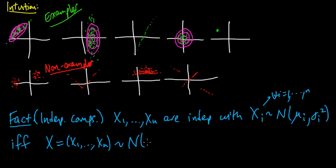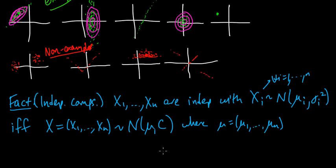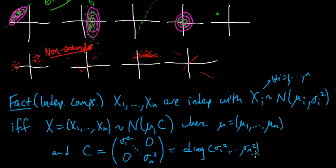That happens if and only if the vector, we form the vector of all of them, is Gaussian distributed, multivariate Gaussian, with mean mu and covariance C, where we just put all the means in a vector. Mu_1 up to mu_n. And the covariance, in this case, the covariance matrix C, we line up the variances along the diagonal. And it's zero everywhere else. So it's a diagonal matrix. Sometimes we write this as diag sigma_1 squared up to sigma_n squared. Diagonal matrix. And this is, in some sense, the simplest case.